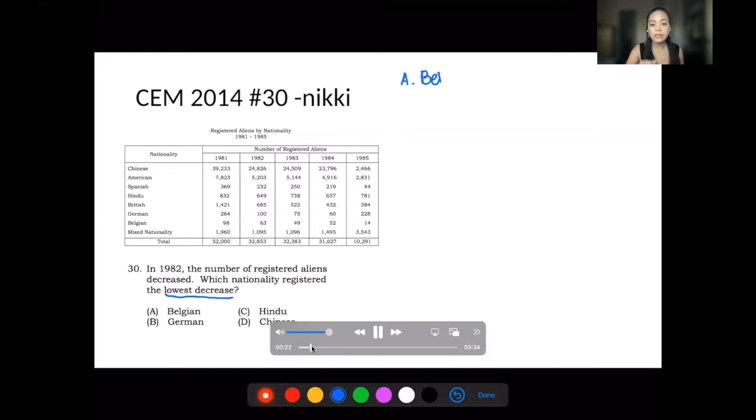I'll start with the decrease of Belgium in 1982 that came from 1981. In Belgium, we have 98 minus 63, and that is 35.